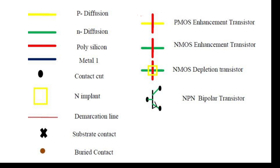P diffusion means yellow color over poly. Poly is red color. So this is poly and this is P diffusion. Both orientations — poly this side and yellow color this side, or yellow on one side and poly on the other — are correct. For NMOS, it is green over poly, or poly horizontal and green color vertical — both are correct. For depletion mode transistor, implant is required. These are enhancement mode transistor symbols. This is a bipolar transistor symbol.